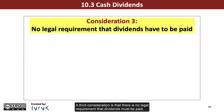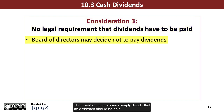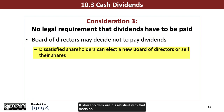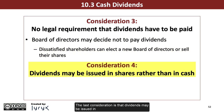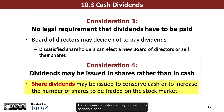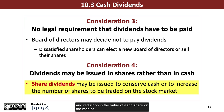A third consideration is that there is no legal requirement that dividends must be paid. The board of directors may simply decide that no dividends should be paid. If shareholders are dissatisfied with that decision, they can vote to elect a new board of directors or sell their shares. The last consideration is that dividends may be issued in shares of the corporation rather than in cash. These share dividends may be issued to conserve cash or to increase the number of shares to be traded on the stock market. This does result in an increase in the number of shares and a reduction in the value of each share on the market.